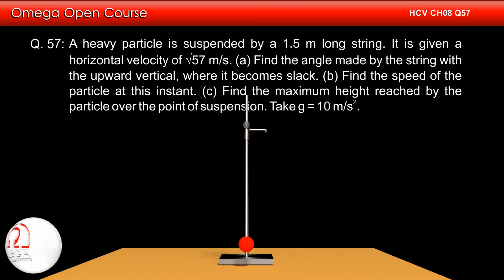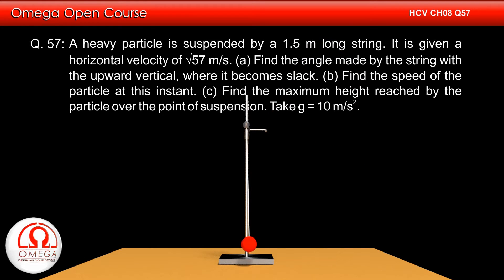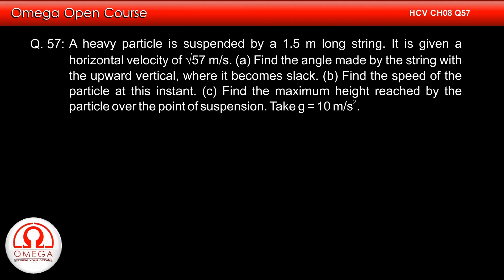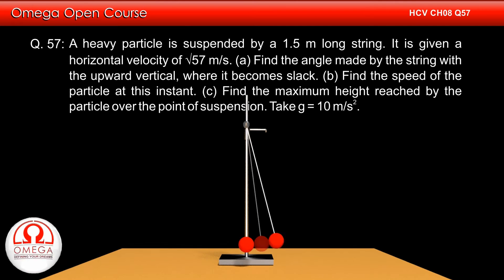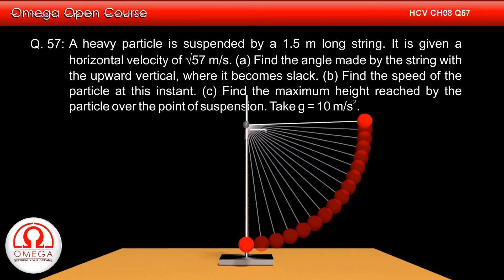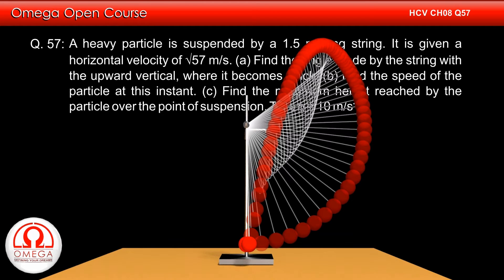A heavy particle is suspended by a 1.5 meter long string. It is given a horizontal velocity of √57 meters per second. Find: A) the angle made by the string with the upward vertical where it becomes slack, B) the speed of the particle at this instant, and C) the maximum height reached by the particle over the point of suspension.